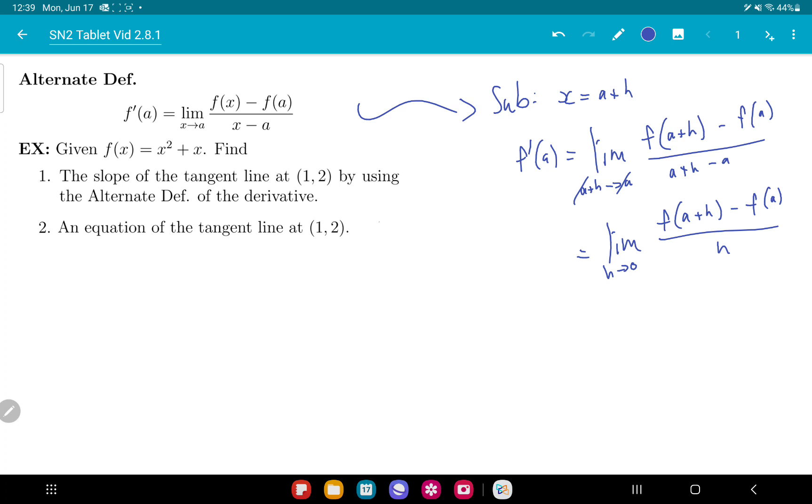All right, now let's use the alternate definition in number one here to find the slope of a tangent line. So we're looking for a tangent line at x equals one. So f prime of one is going to be limit x goes to one, f of x minus f of one, all divided by x minus one.